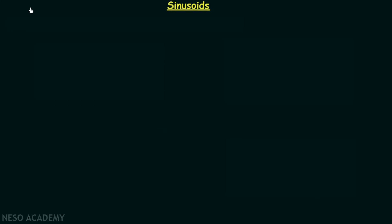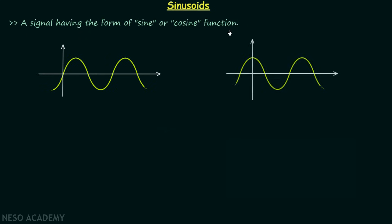In the previous lecture I gave the definition of sinusoids and now we are going to have the detailed discussion on the same topic. We know the sinusoid is a signal having the form of sine or cosine function. To understand the sinusoids in more detail I will take the sine function.